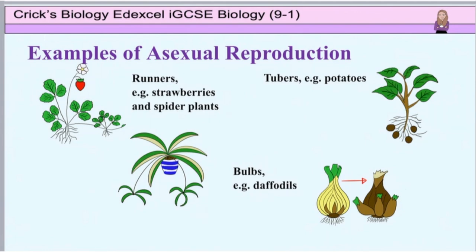In plants, asexual reproduction is very useful for taking over new areas of land not yet occupied by lots of other plants, because this form of reproduction only requires one plant and is very quick. If a seed lands in a new area, once it has grown into a fully formed plant it can undergo asexual reproduction to spread quickly. However, if this plant is susceptible to a disease and that disease spreads, whole plant colonies can be wiped out. This has been a problem with cloned banana plants which are susceptible to a disease called black sigatoka.